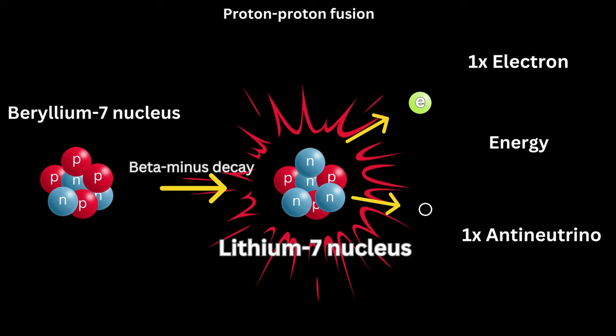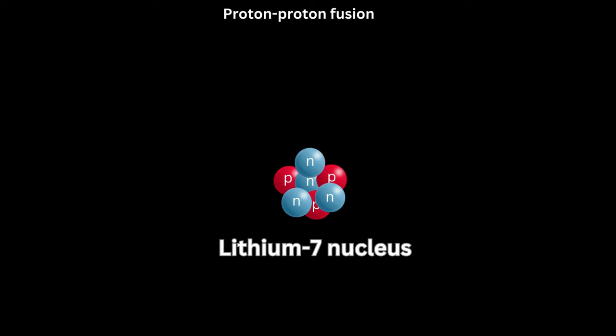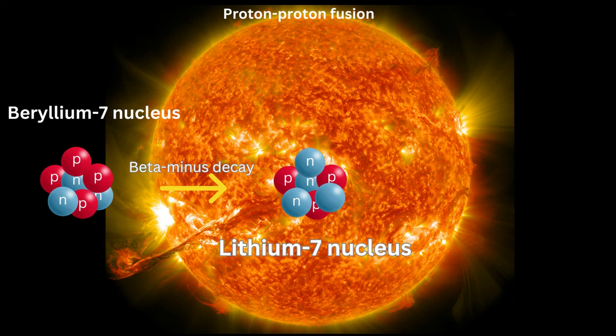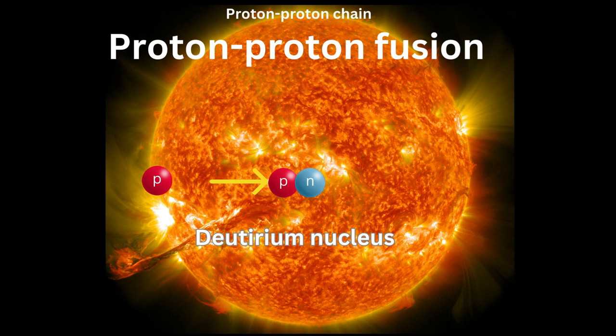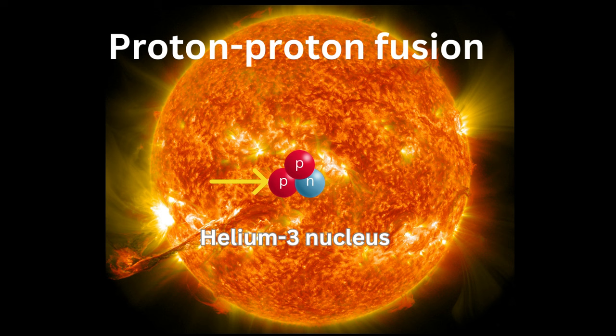The lithium-7 nucleus does not directly take part in subsequent fusion processes within the sun after the beryllium-7 decay. As was mentioned in the earlier steps of the proton-proton chain, the primary reactions in the sun's core involve the fusion of protons to generate helium nuclei.